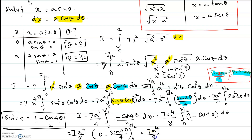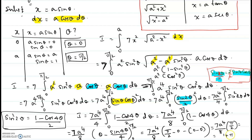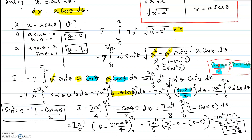So we have 7a⁴/8 times plugging in the limits. The upper limit is θ = π/2: in the second term sin(4 × π/2) = sin(2π) = 0. The lower limit gives everything equal to 0. So it becomes 7a⁴/8 times π/2, which equals 14πa⁴/16, simplified to 7πa⁴/16.